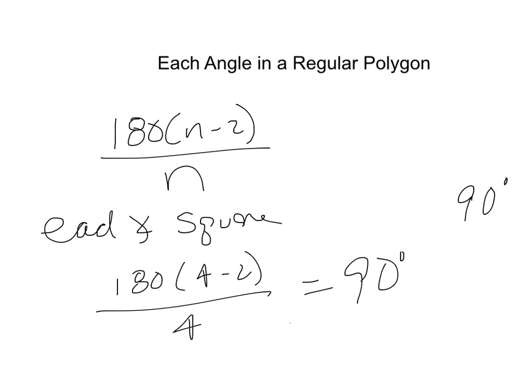Let's take a look at the next formula. The next formula is the sum of the exterior angles. Now, the sum of the exterior angles is always 360.